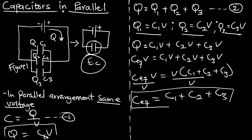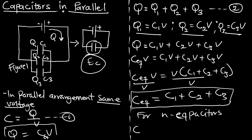This is our final equation. If capacitors are in parallel connection or arranged in parallel form, the equivalent capacitance is just the summation of the individual capacitances of each capacitor. Therefore, for N number of capacitors — say 10 or 20 — the equivalent capacitance for parallel arrangement is C1 plus C2 plus ... plus Cn. This is similar to resistors in series, where you also sum the resistances.